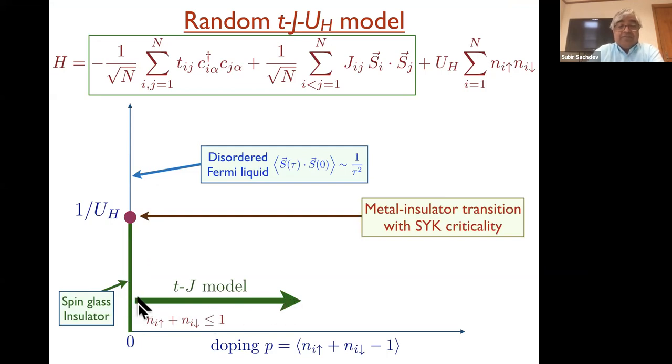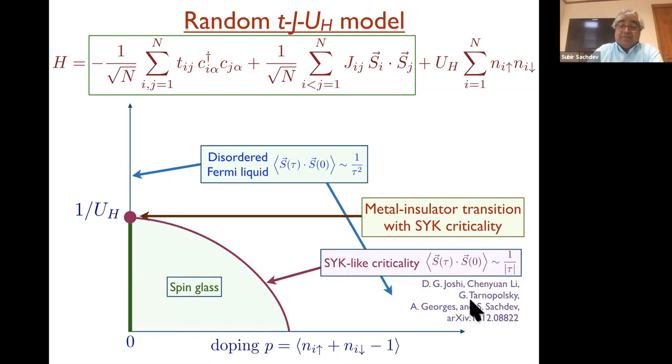Now we can start to dope the system. So if you dope the system at very large U, then you're going to do that by just essentially sending U to infinity. Then you'll only have three possible states at each site, and that'll be done by what you call the t-J model. So this has not been studied numerically yet, although some other work is underway. But we have our recent paper of Joshi et al, where we have some arguments as to what happens. So the argument is that the spin glass phase that's found at half filling gets extended to non-zero doping. And then eventually there's a quantum critical point to a metallic state at some critical Pc. And all along this line, you again have SYK criticality. Although I should mention that the details of the theory along this line are quite different from the theory at that point. Here there's particle-hole symmetry, there's particle-hole asymmetry only at that point.